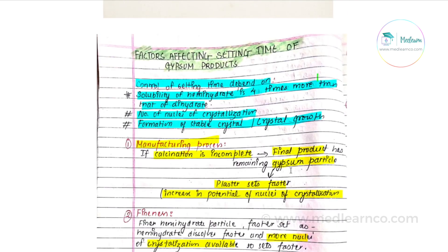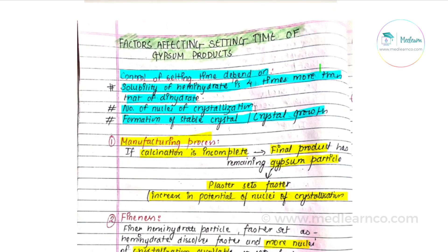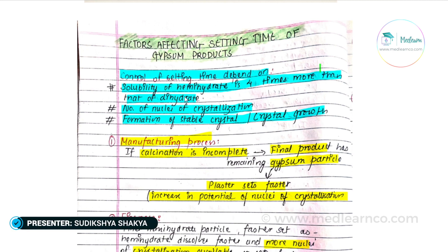Factors affecting setting time: control of the setting time depends upon three things. First, solubility of hemihydrate is four times more than that of dihydrate. Second, the number of nuclei of crystallization. Third, final formation of stable crystals or crystal growth. These three are the basis for control of setting time. We can broadly list 10 factors affecting setting time.